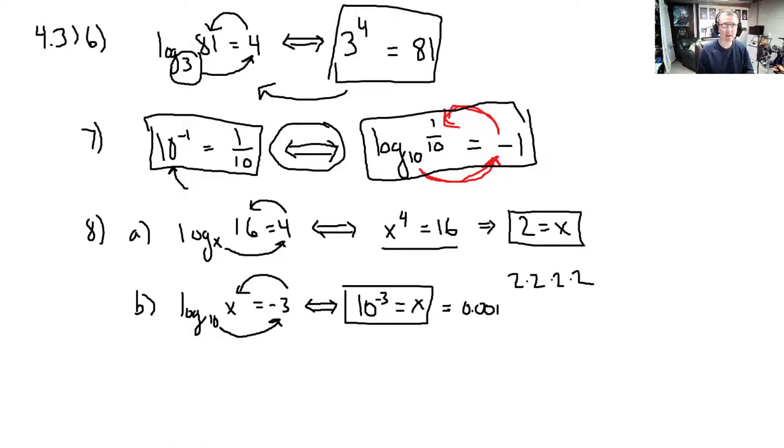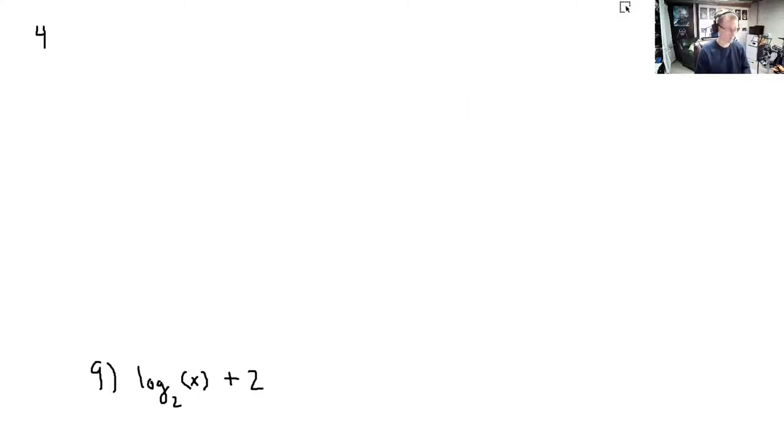So for question 9, we're almost running out of room here. It says to graph log base 2 of x. And I put parentheses around this x because that's the only thing we're plugging into logarithm base 2. And then we're adding to the logarithm. After it's been evaluated at x, we're adding to that 2. All right, so I need to clear up some space to do this. This is still 4.3.